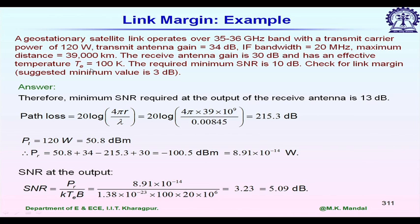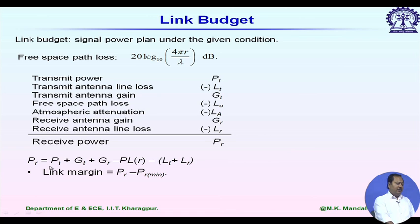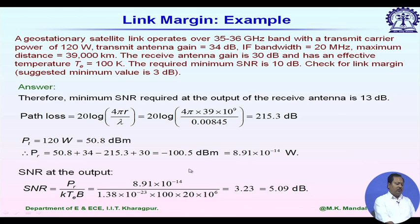The effective temperature will be discussed in the next class. The required minimum signal-to-noise ratio SNR is 10 dB, and we need to check whether a link margin of at least 3 dB is achieved. No data is given for line losses, so we will neglect those terms. Considering at least 3 dB link margin, minimum SNR required at the receiver output is 10 dB plus 3 dB, which is 13 dB.